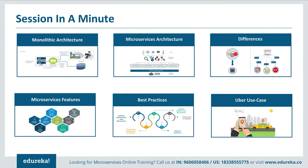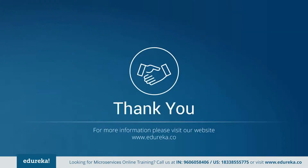Let me give you a quick summary of what we discussed. We started with understanding Monolithic Architecture and its challenges, then went through microservice architecture and understood the differences between both. We focused on the features of microservices and discussed the best practices to design them. Finally, we compared Uber's previous framework to the present one and understood what made them change their architecture. Thank you for watching this video and have a great day.